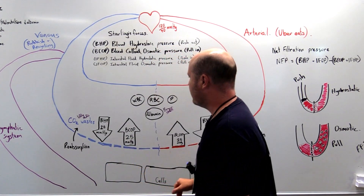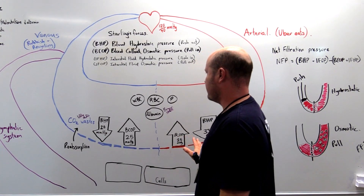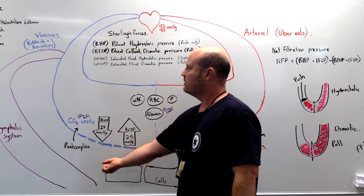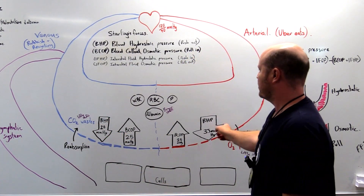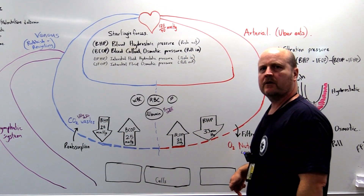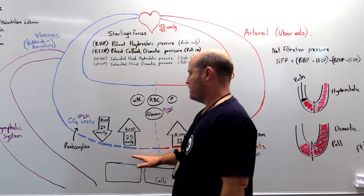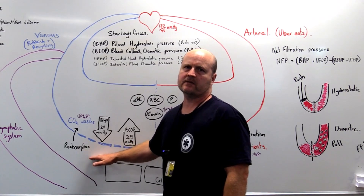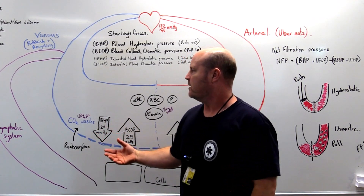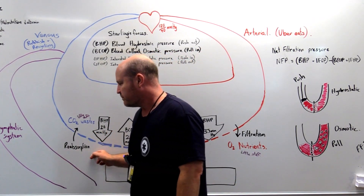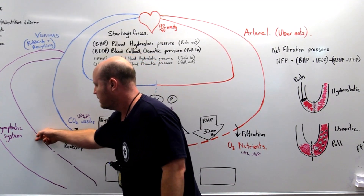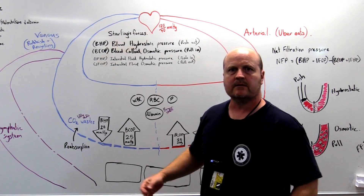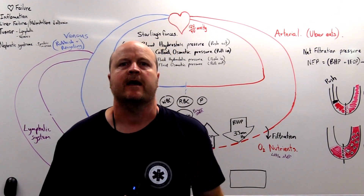You can see the difference — maybe a pressure of 5 going back in versus a pressure of 10 going out — which means we're going to be left with about 5 in the interstitial space. But remember, we've got our lymphatic system which mops up any excess there to keep the balance.